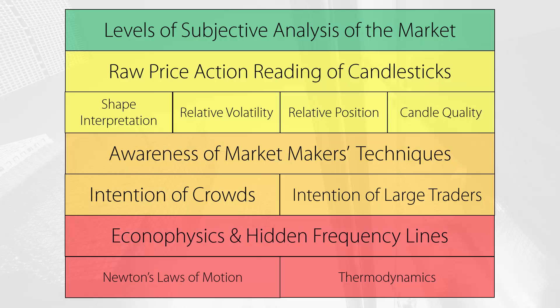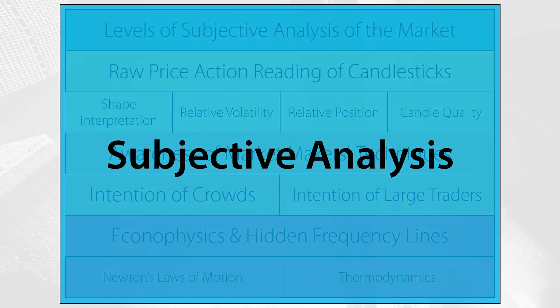The hidden frequency lines are lines that cut through price in a non-obvious way. The angle of such lines can be extremely important to calculate targets or hidden support and resistance areas that are not visible to the trader who is not aware of these concepts. All of these things are wrapped in a layer of subjectivity because eventually, we have to make judgments about the way in which price reacts when it interacts with these principles.